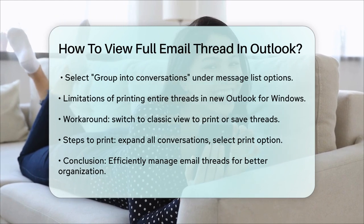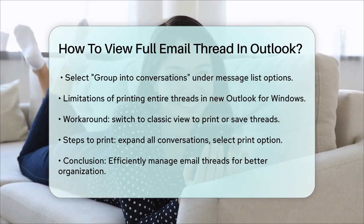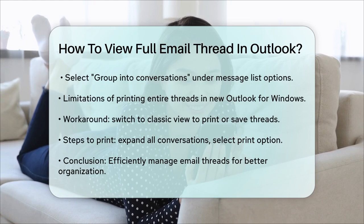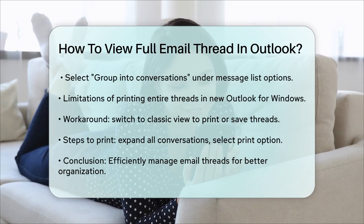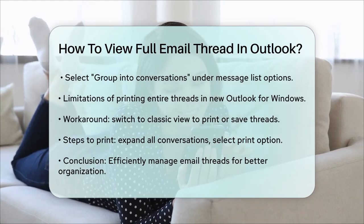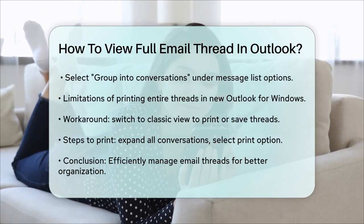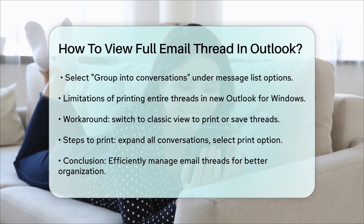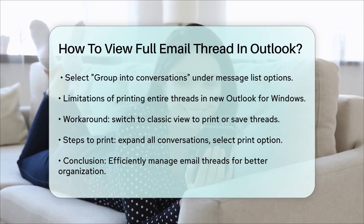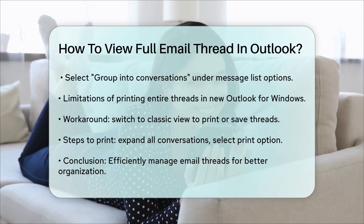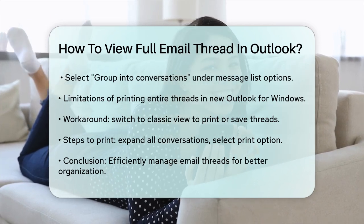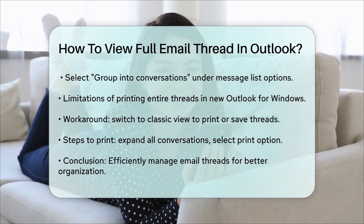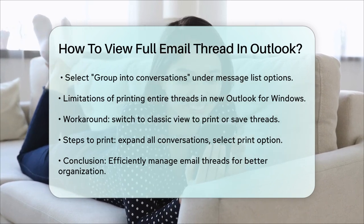To print the entire thread, open the thread in Outlook, expand all the conversations, and then select the Print option. If you're still having issues, switching to the classic view can help ensure you get the whole thread printed or saved as a PDF document.